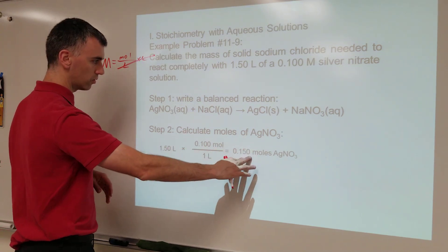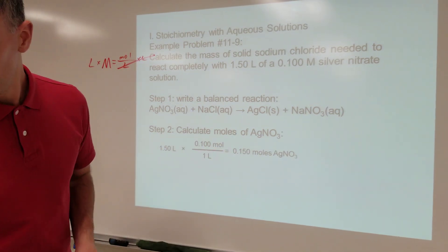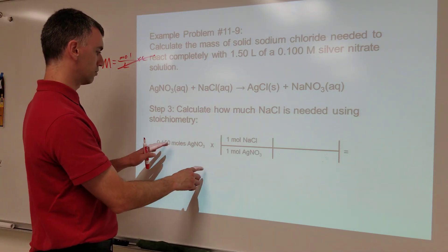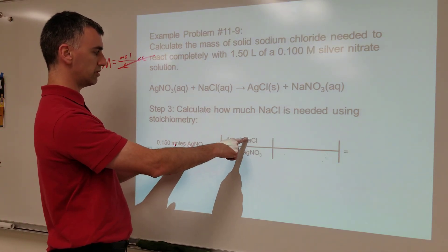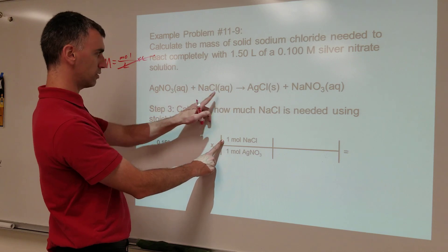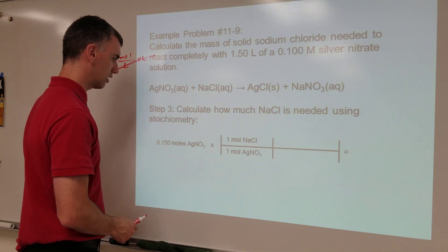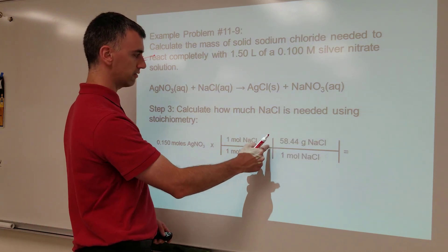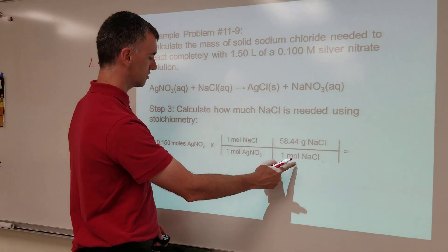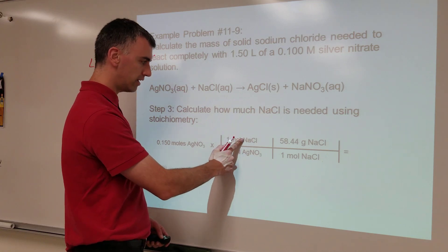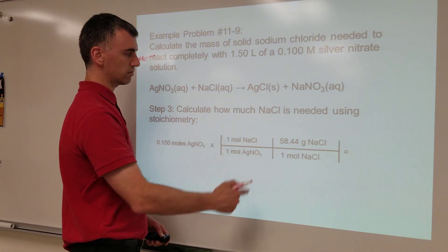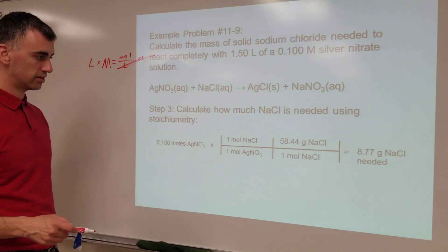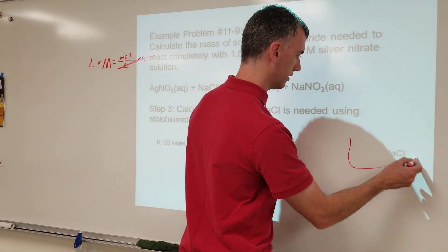Once you have converted to moles, you then use stoichiometry to convert from moles of what you're given to moles of what you're being asked for. Remember these come from a balanced equation — there's the NaCl, there's the silver nitrate. And then once you've done that, you can take moles of what you're given, turn them into moles of what you're trying to find. Moles of what you're trying to find is then converted to grams, because this question asks for mass.